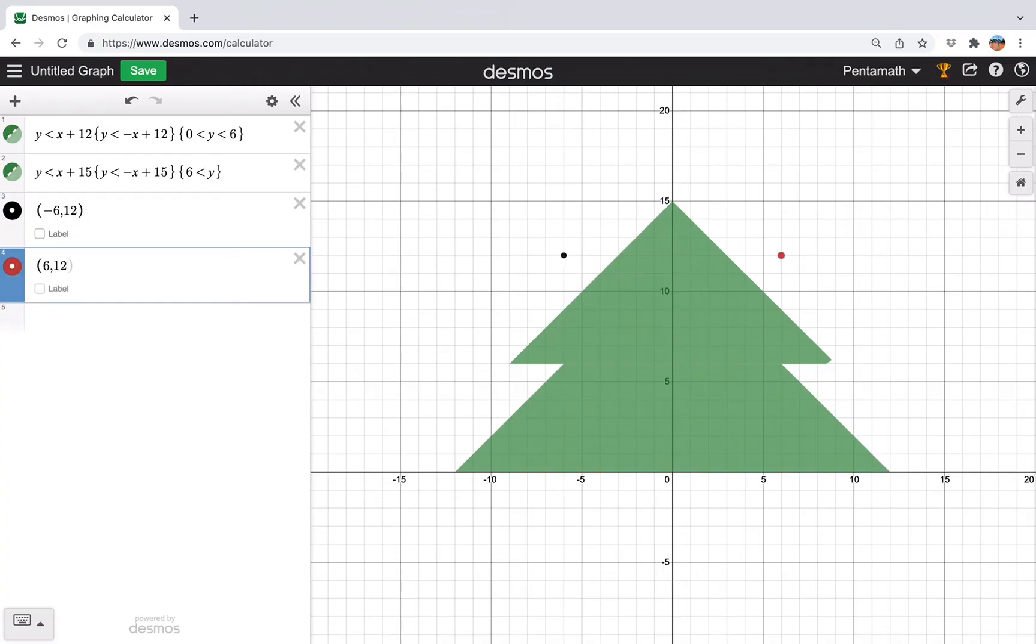Then we have 6, 12 on the other side. And then to make it an isosceles triangle, again we have 0, 18. And now we just need to make the lines. So first line again, it's obvious, it's just y equals 12.